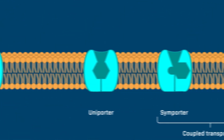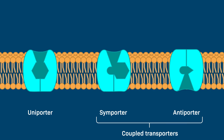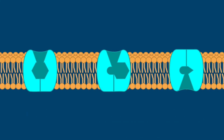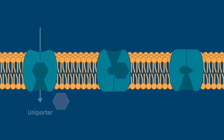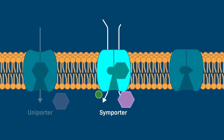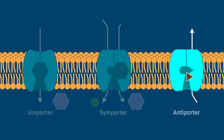In sum, carrier proteins bind to solute molecules and change conformations as they transport solutes across the membrane. Carrier proteins can be grouped into three types: uniporters move one type of solute molecule; symporters carry two types of solute molecules in the same direction; and antiporters move two types of solutes in opposite directions.